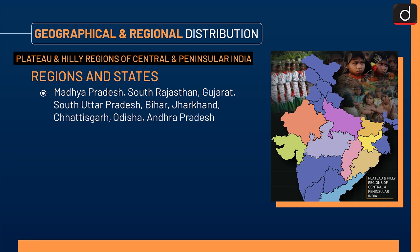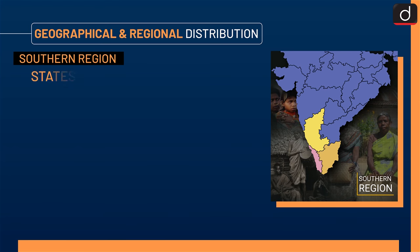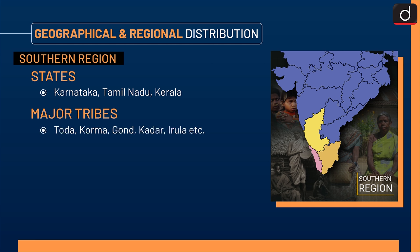Next is the Plateau and Hilly Regions of Central and Peninsular India. Similarly, the next is the Southern Region. States are Karnataka, Tamil Nadu, and Kerala, and the major tribes are Toda, Korma, Gond, Qadar, Irula, etc.